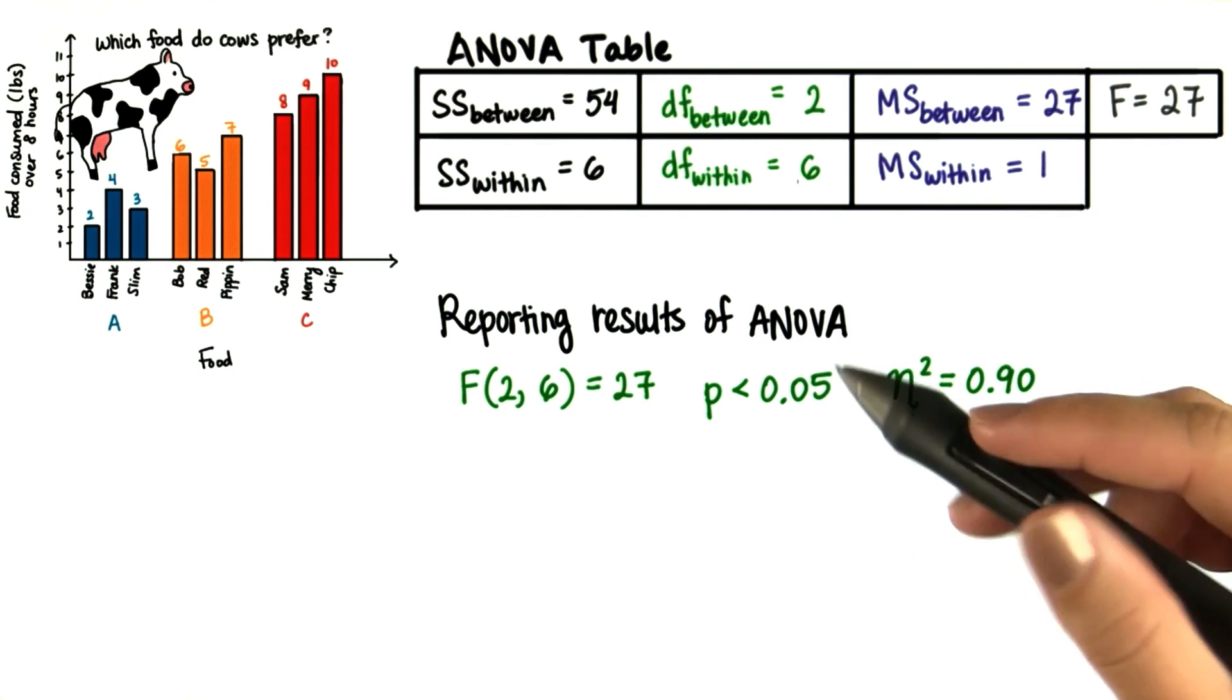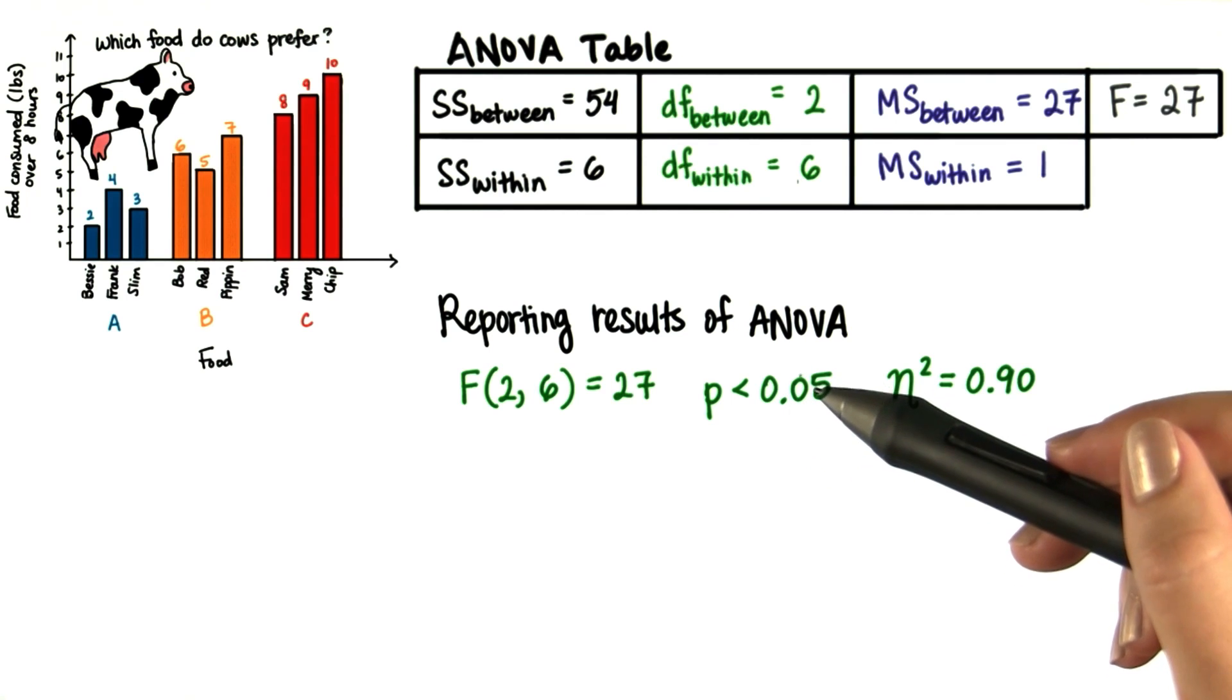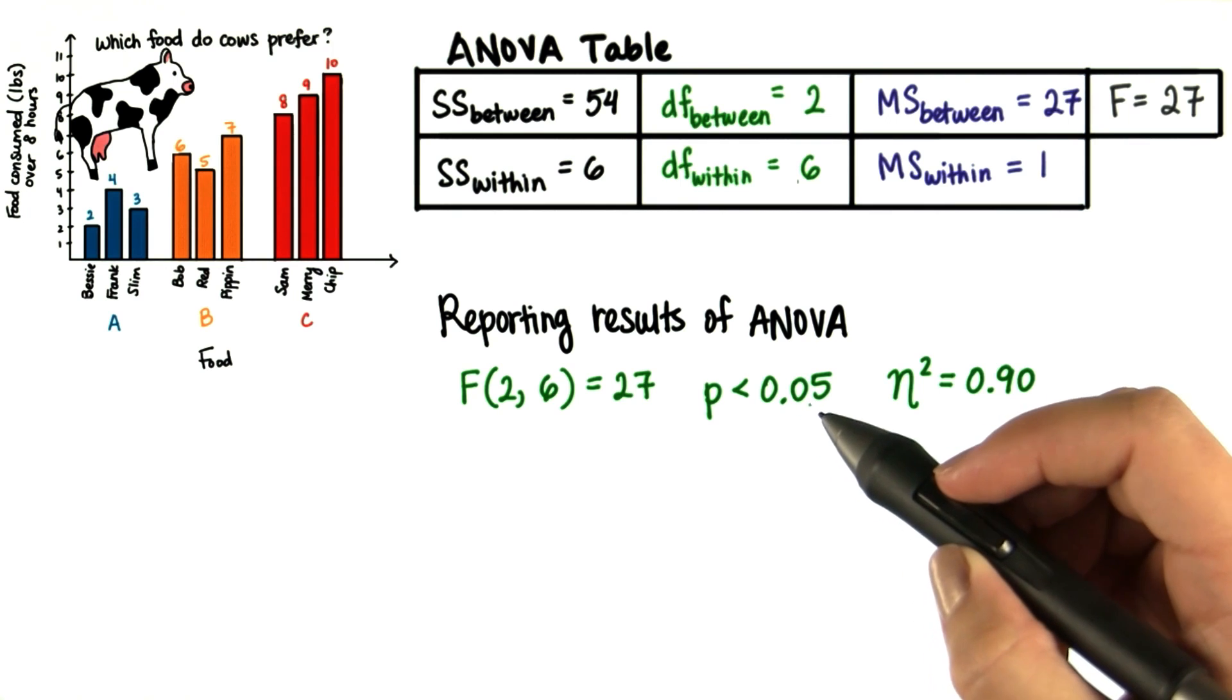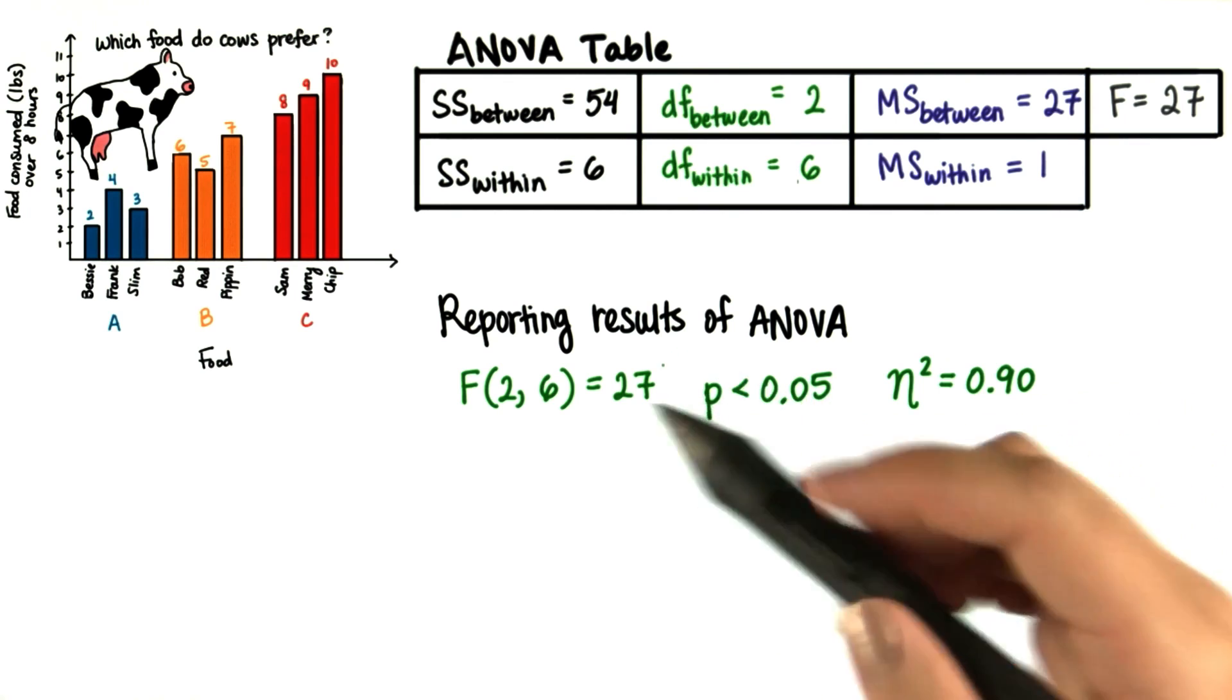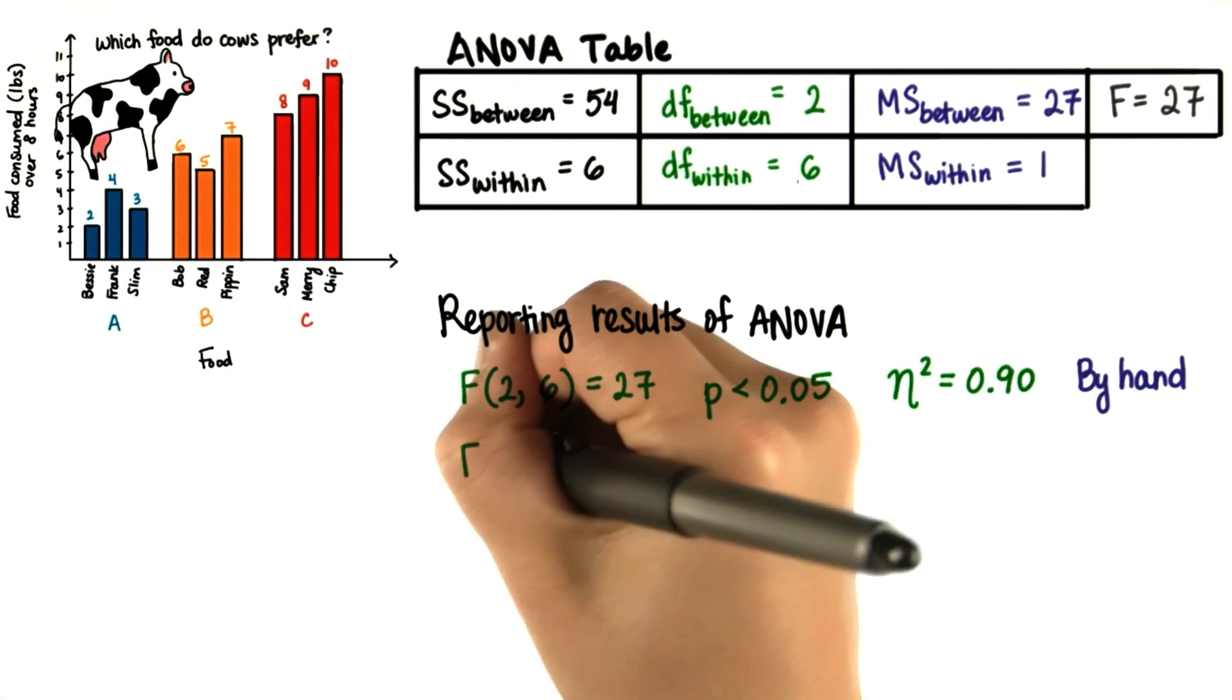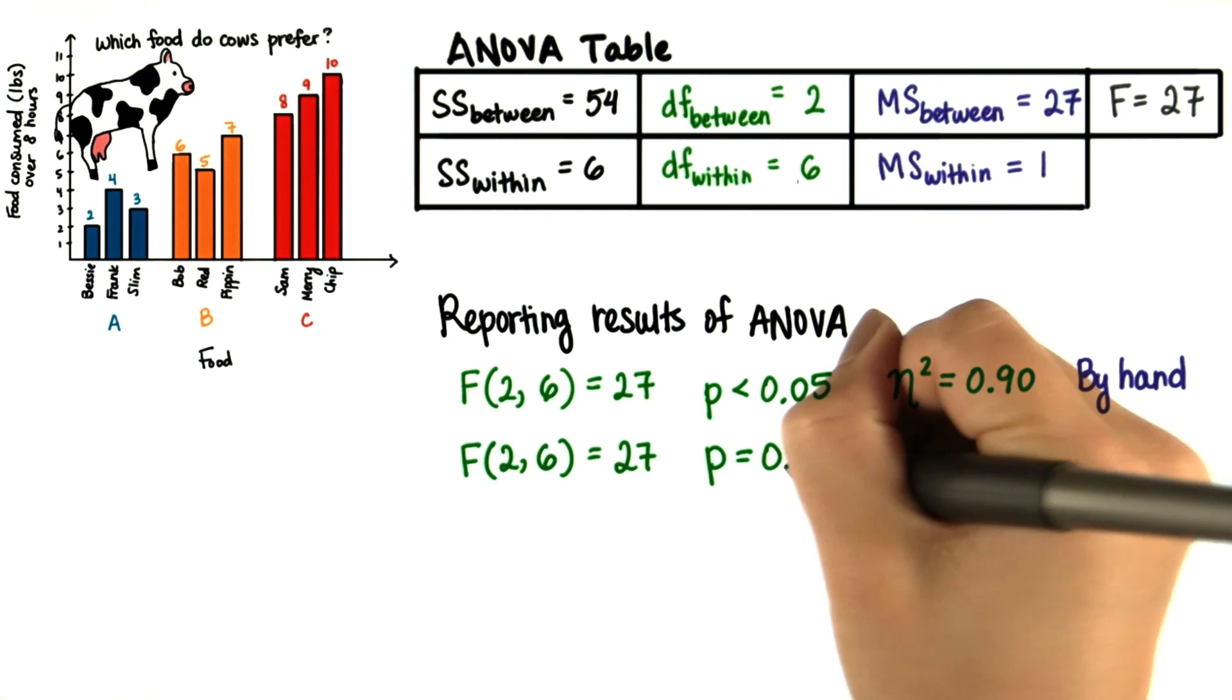Note that when we're doing ANOVA by hand, we can't find the exact p value. This is the same as with t-tests. We only know that our p value is less than 0.05, our alpha level, because our F statistic is greater than the F critical value. If we're using software, it'll be the same thing, except we can calculate the exact p value.